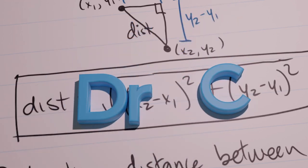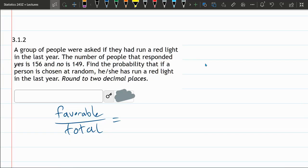In these simple probability questions, we just have to decide how many favorable outcomes there are and how many total outcomes there are, and then just do that division or that fraction.